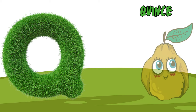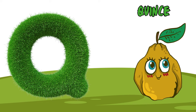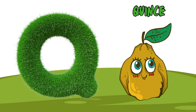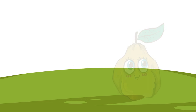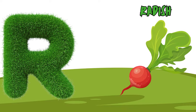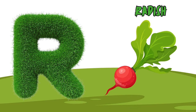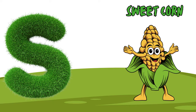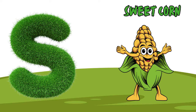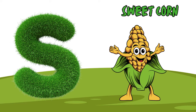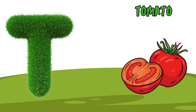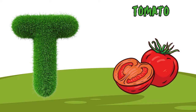Q is for quince, qu-qu-quince. R is for radish, r-r-radish. S is for sweet corn, s-s-sweet corn. T is for tomato, t-t-tomato.